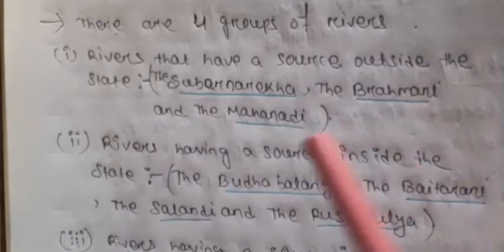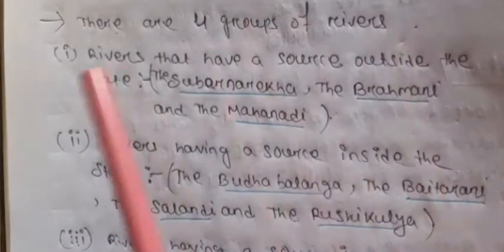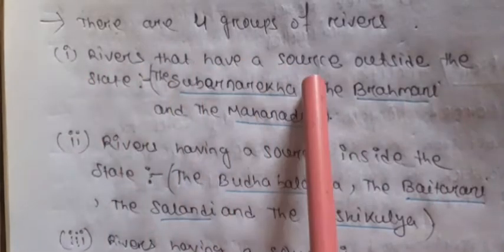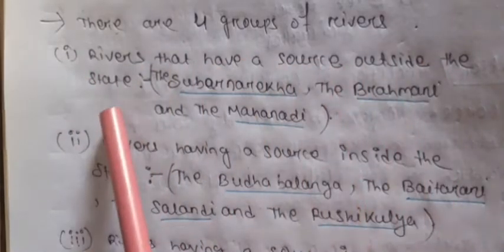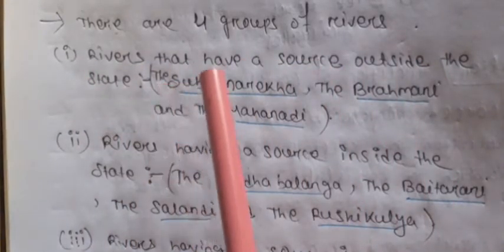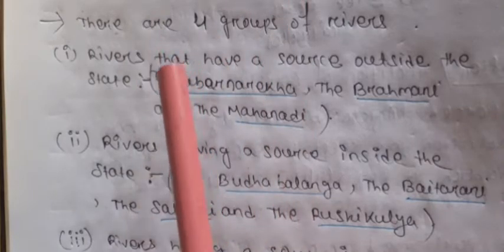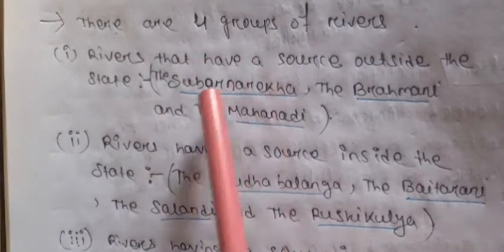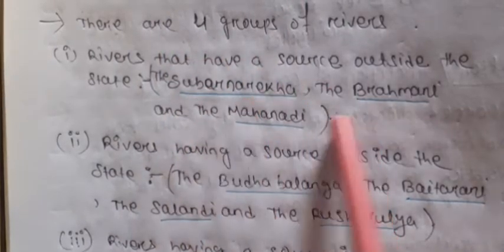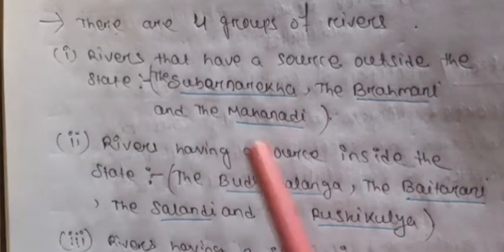There are 4 groups of rivers. The first group is rivers that have a source outside the state — meaning the origin of the river is outside Odisha. These are Subarnarekha, Brahmani, and Mahanadi.